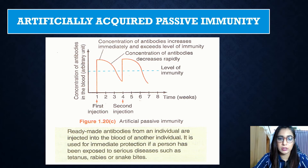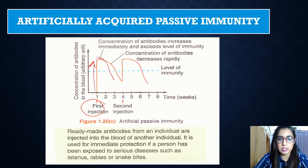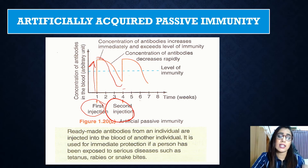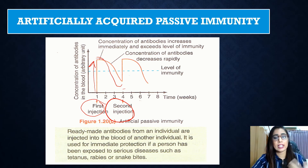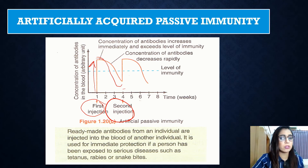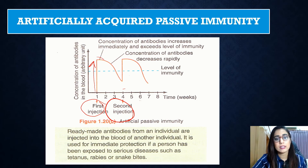Looking at the graph, after the first injection the immunity level boosts above the immunity threshold, then the concentration decreases. If you get bitten by a snake again, you need a second injection — you cannot rely on the first injection to provide permanent immunity. Ready-made antibodies are injected into the blood of an individual for immediate protection when a person has been exposed to a serious disease.